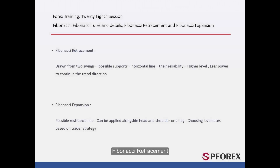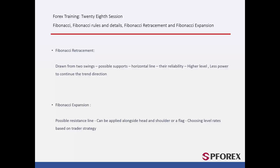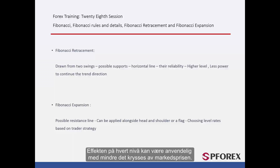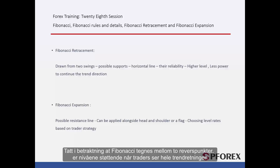Fibonacci Retracement can be drawn between two swings, which show probable supportive levels. The effect of each level may be applicable unless it is crossed by market price. If price reaches higher levels, the trend has more tendency to change direction. Considering that Fibonacci is drawn between two reverse points, levels are supportive when a trader realises the whole trend direction. Otherwise, if a trader determines direction of the trend after it hits the zero level, the Fibonacci levels would act as resistance.